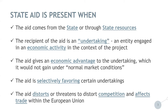The Interreg Central Europe Programme addresses State Aid in all phases of the project life cycle. The key step of the State Aid approach is already in the application stage, when submitted applications undergo a specific State Aid assessment focused on listed criteria in order to determine whether or not State Aid is present in certain project proposals.